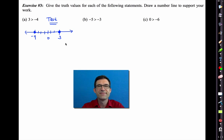So I'd like you to pause the video right now and think about letter B and letter C. All right, let's take a look. Letter B says negative 5 is greater than negative 3. Well, let me put the 0 here. 1, 2, 3. There's my negative 3. 4, 5. There's my negative 5. Well, if negative 5 was greater than negative 3, it would lie to the right of it. It doesn't. It lies to the left of it, and therefore that is a false statement.